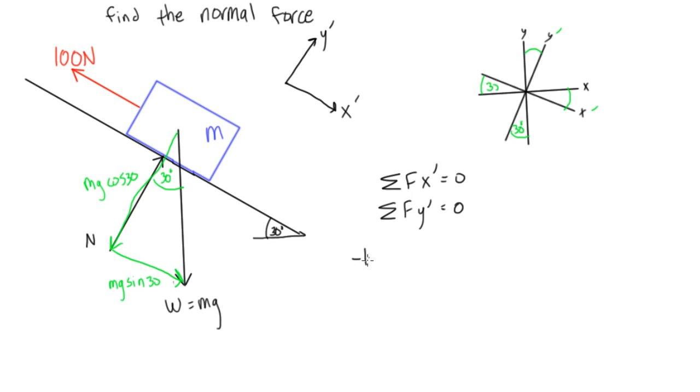So let's first of all solve for the x prime direction. So we'll have negative 100 plus mg sine 30. And we can even write this 9.81 sine 30 is equal to zero.